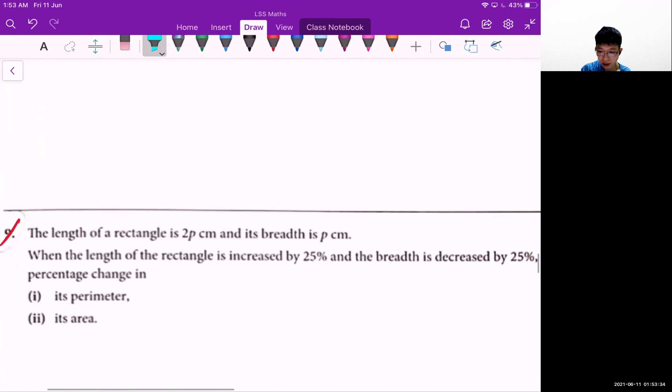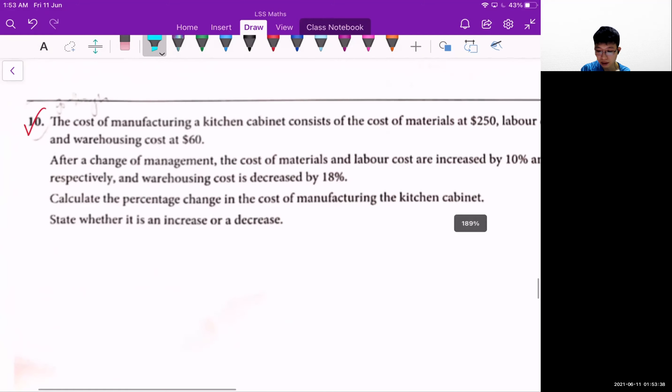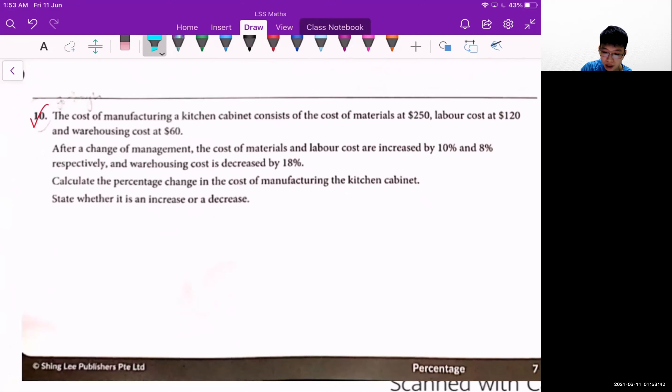For question 10, I want to highlight some parts and I need you to try this question yourself. This is the cost of the material, this is the labor cost, and this is the warehouse cost. So to make a kitchen cabinet, I require three costs.